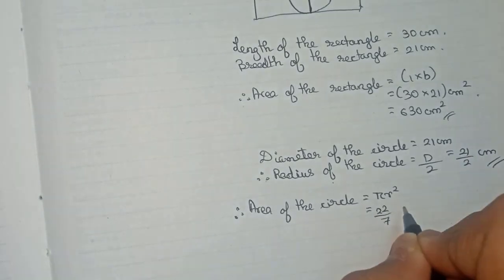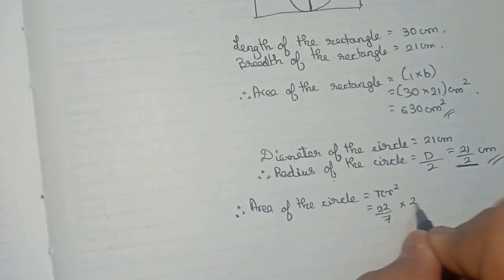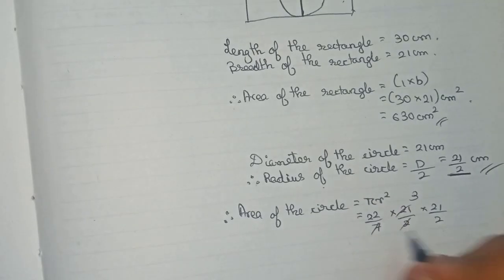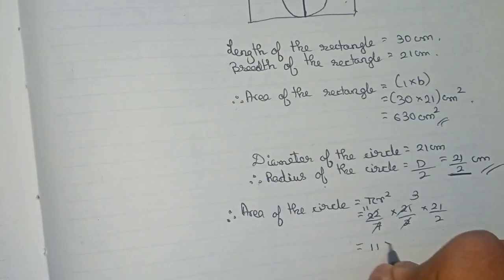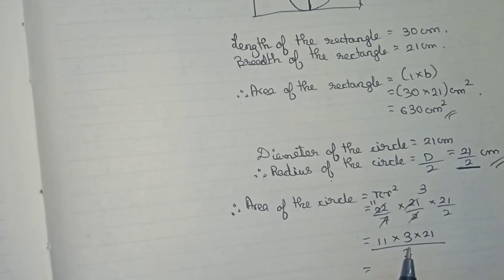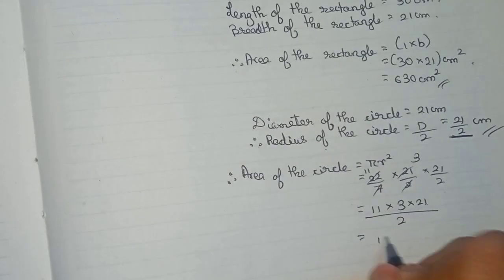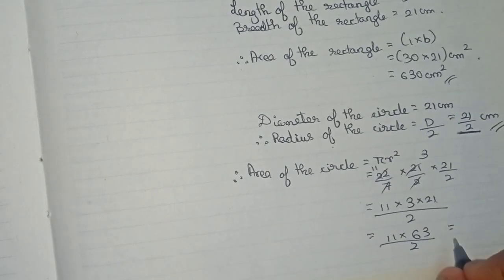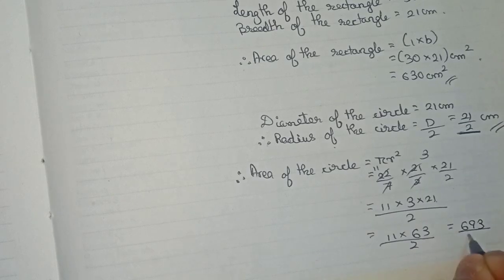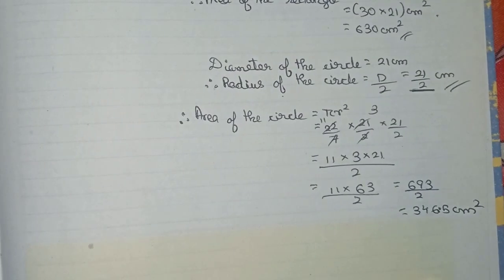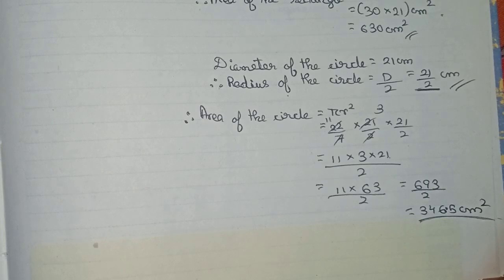So area = 22/7 × (21/2) × (21/2). Here, 7 and 21 cancel to give 3, and 2 and 22 cancel to give 11. So we get 11 × 3 × 21 by 2. That gives 11 × 63 by 2, which equals 693 by 2. Dividing by 2, we get 346.5 centimeters squared. So 346.5 cm² is the area of the biggest circle that can be cut out.